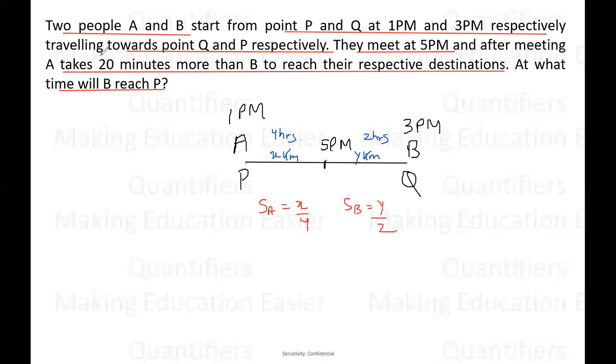Now students comes the main part. After meeting A is taking 20 minutes more. Now I'm assuming time as T_A. T_A is the time which A is taking after meeting. A is going to cover Y kilometers. This is the distance which A is going to cover after meeting and we know the speed of A. So from here we can say that time taken by A will be distance upon speed. Distance is Y and speed of A is X by 4. I'm going to simplify so we'll get 4Y by X. This is the time taken by A after meeting.